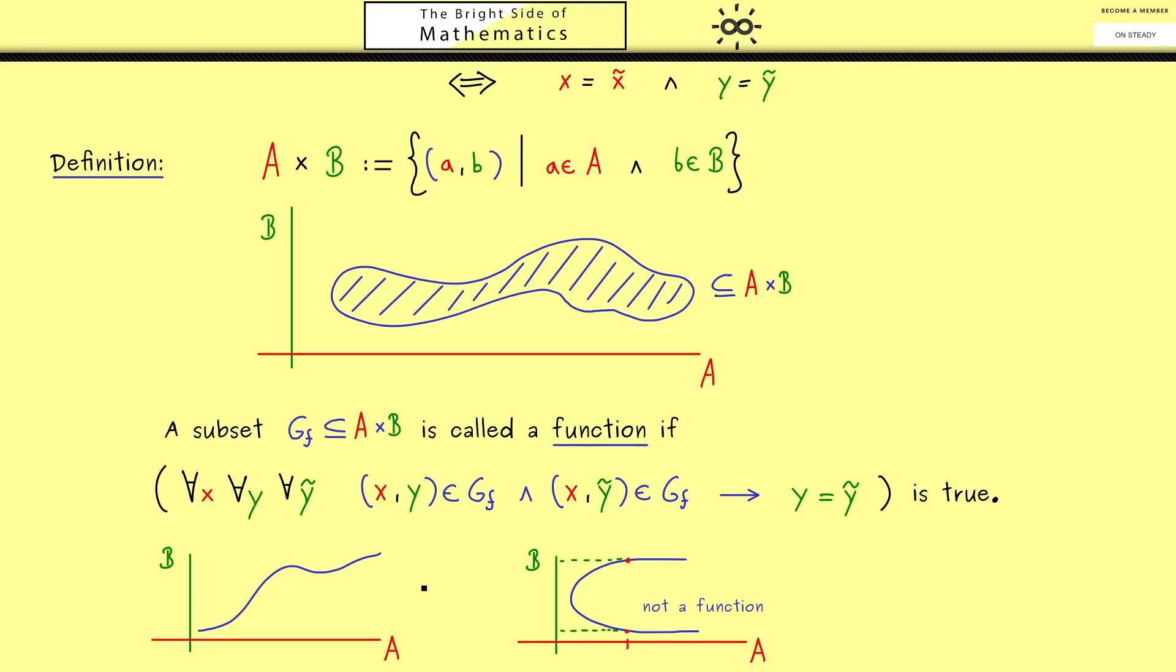Okay, maybe it looks complicated, but it's just the idea you see here on the left. We want something like this where each x gets at most one y, and not two as here.